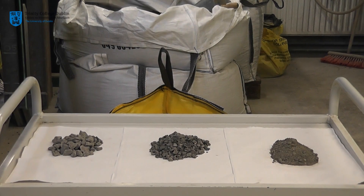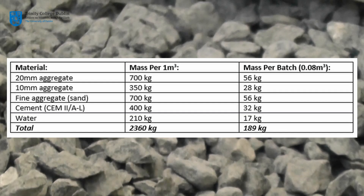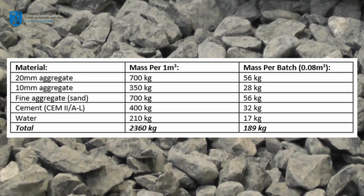Today's lab session requires much less than this — we need a volume of approximately 0.08 m³. Multiplying the individual constituents of the concrete by the required volume gives the required mass of each constituent.